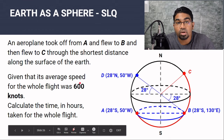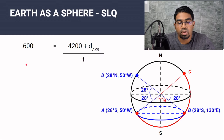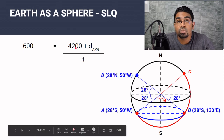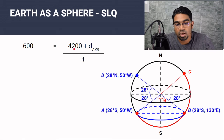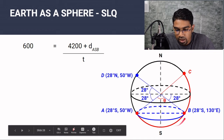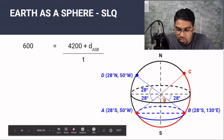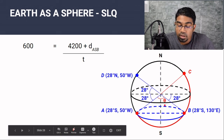Given that the average speed for the whole flight was 600 knots (nautical miles per hour), calculate the time in hours for the whole flight. The formula is: average speed = total distance ÷ total time. We have the average speed (600 knots) and the distance from B to C (4200 nautical miles, given earlier). The distance we still need is the distance from A to B through the south pole.